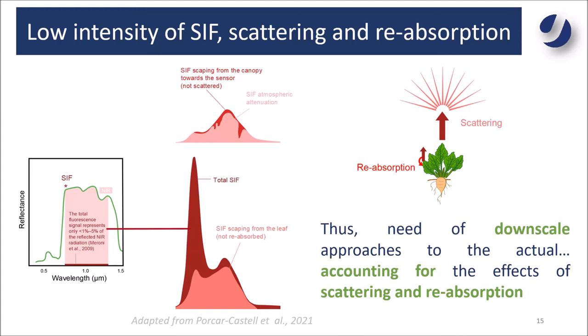The SIF or chlorophyll fluorescence escaping from the leaf that is not reabsorbed leaves the leaf, but it can also be scattered in the canopy. After these two reabsorption and scattering processes, the real SIF signal reaching the sensor is very low. That is why in the specific case of SIF, it is worthwhile to go for downscaling approaches accounting for the scattering and reabsorption effects, bringing canopy-level SIF to leaf-level information.